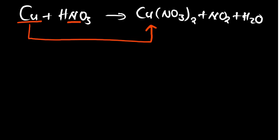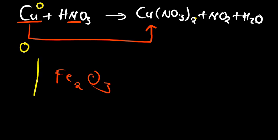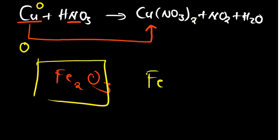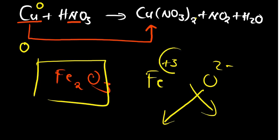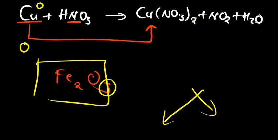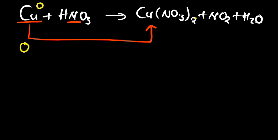Copper on the left side exists in its elementary form, so it has an oxidation number of zero. On the other side, because there are 2 nitrate groups (each with a minus 1 charge) exchanging with copper, this tells us copper has an oxidation state of plus 2 in the product.